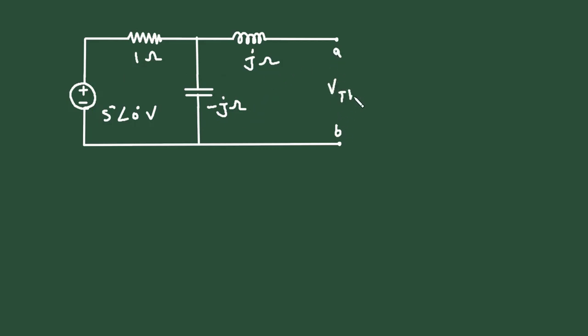Now we can find the value of this voltage. So this voltage is Vth. The voltage across these two terminals will be Vth. Now let's say this is a reference node, or we can directly find this Vth by using voltage division rule. So the voltage across this minus j ohm capacitance will be Vth.